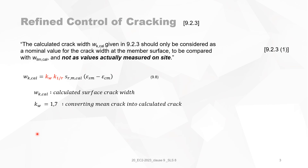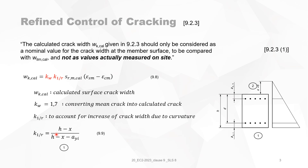WK,PAL includes a factor converting the mean crack width into a calculated crack width, which is 1.7, and a factor to account for the increase of crack width due to curvature. The factor k·(1/r) represents the most tension side, and on the least tension side where x is negative, you can approximate k·(1/r) with the formula stated in 9.10.